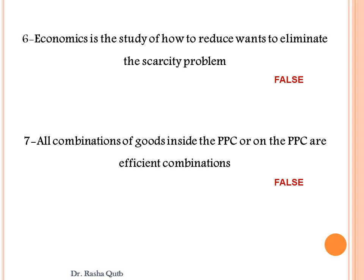All combinations of goods located on the production possibility curve are efficient combinations, because the available resources are fully employed.